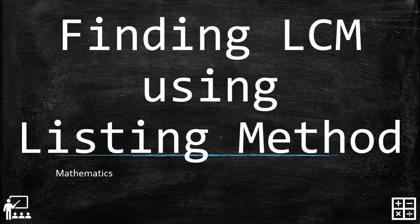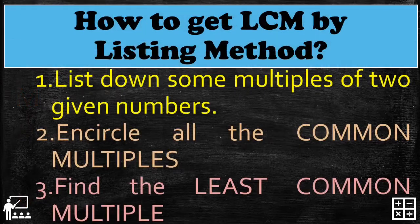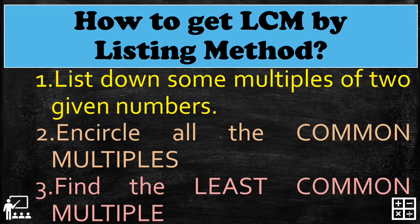This video lesson is about finding the LCM using the listing method. LCM stands for least common multiple, and it is the smallest positive number that is a multiple of two or more numbers. To find the LCM by listing method: first, list down some multiples of the given numbers; second, circle all the common multiples; and third, find the least common multiple.